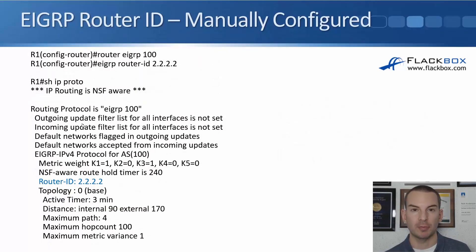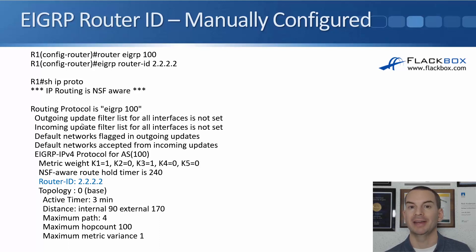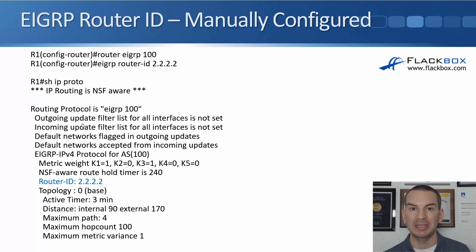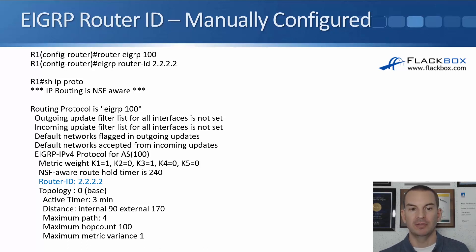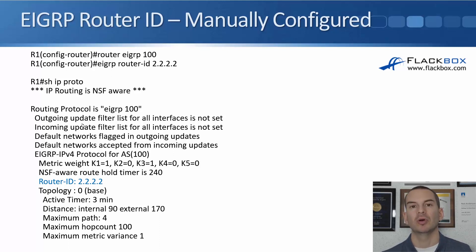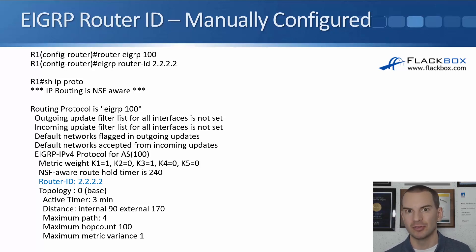To manually specify the router ID, use the command 'eigrp router-id' followed by an IPv4-format address under the EIGRP process. The router doesn't need to actually have that IP address configured on it, since this is technically just an identifier that uses the IPv4 format. However, real-world best practice is to use an IP address that is configured on the router to avoid confusion.